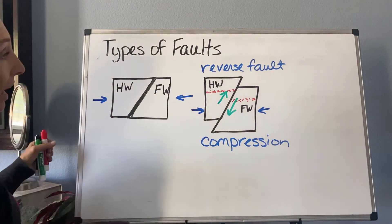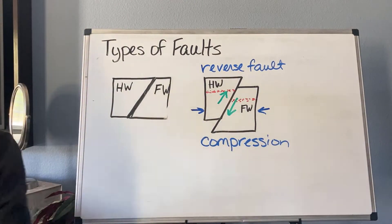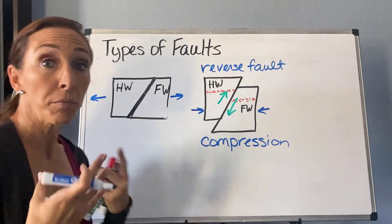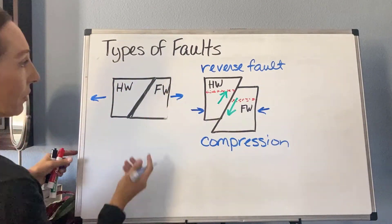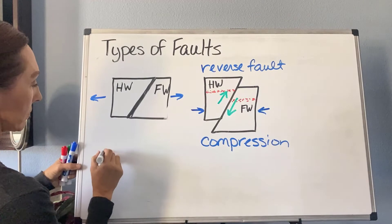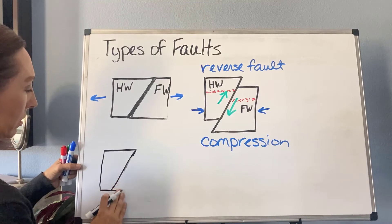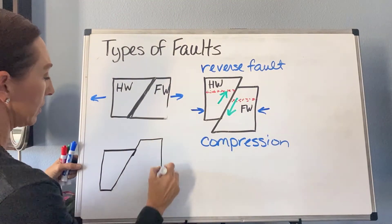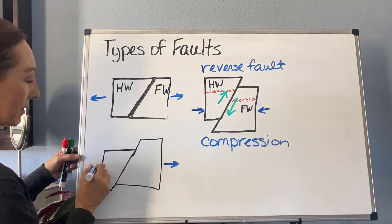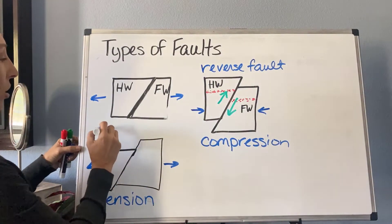Now let's see what happens when we apply tension. I'm going to pull this apart. From our books demo, the hanging wall is actually going to slide down. So instead of the previous picture, what you're going to get is this block diagram here — something like that. I've pulled everything apart — this is tension, tensional stress.